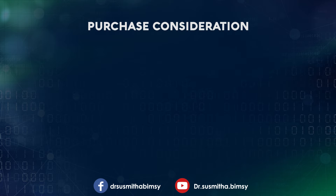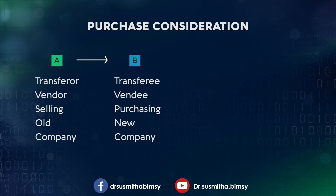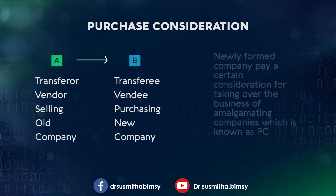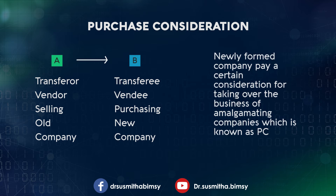I have written the meaning of PC here just for recalling purposes, so just go through it. Company A is getting absorbed by Company B Limited, so Company A is called the transferor company, vendor company, selling company, or old company. Company B is taking over the business of A Limited, so Company B is called the transferee company, vendee company, purchasing company, or new company. Company B has to pay the purchase consideration to Company A Limited for taking over their business.